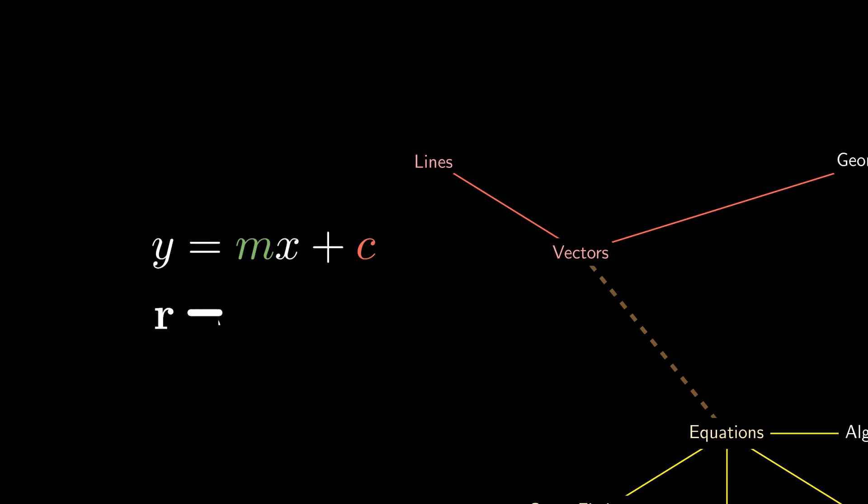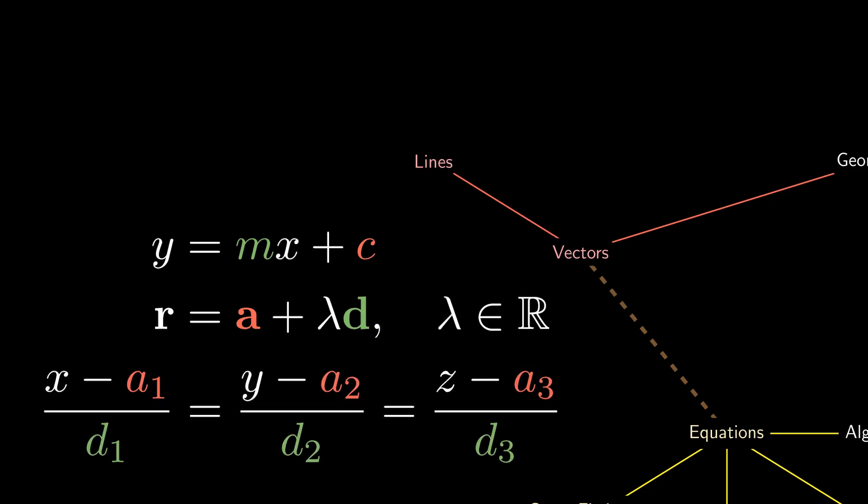we start from a position a and travel λ units in the direction d. Doing a bit of algebra, we can obtain the cartesian equation of a line in three-dimensional space.